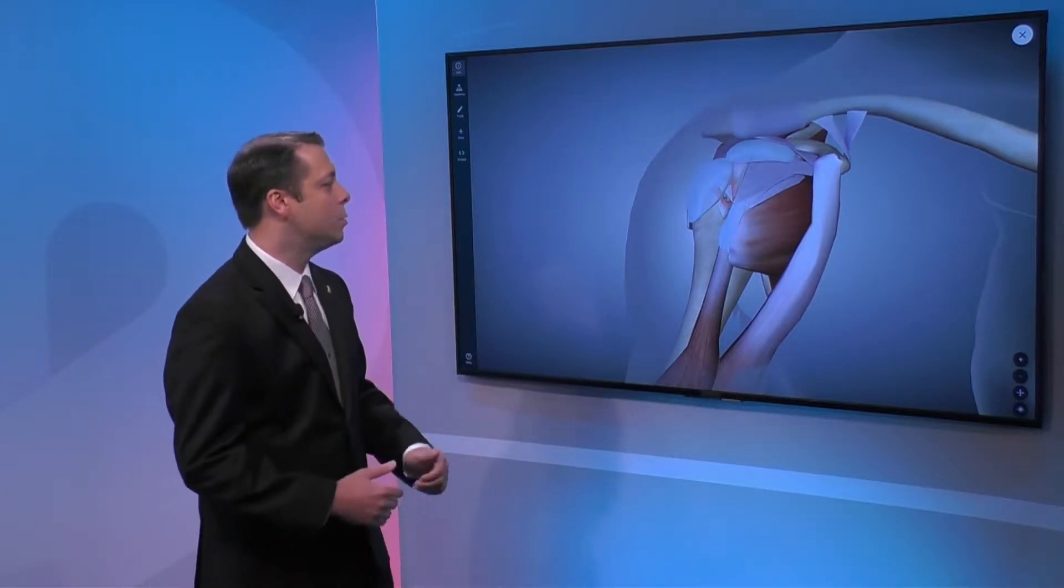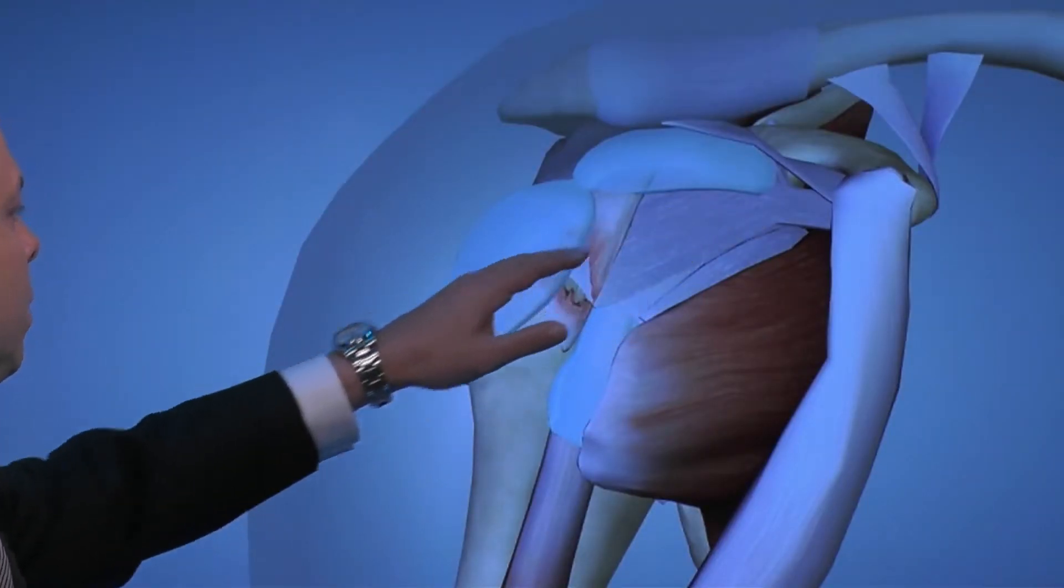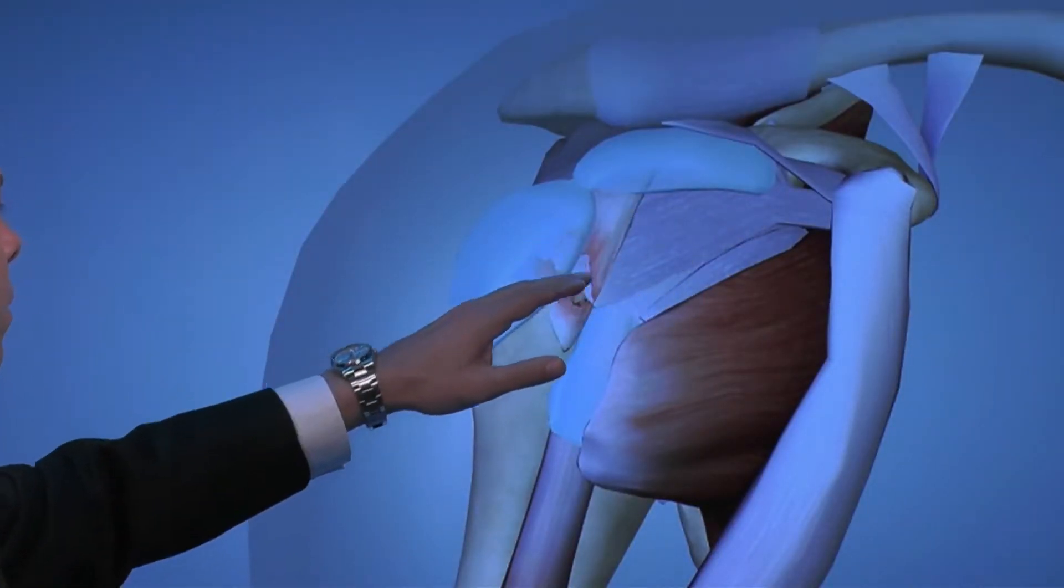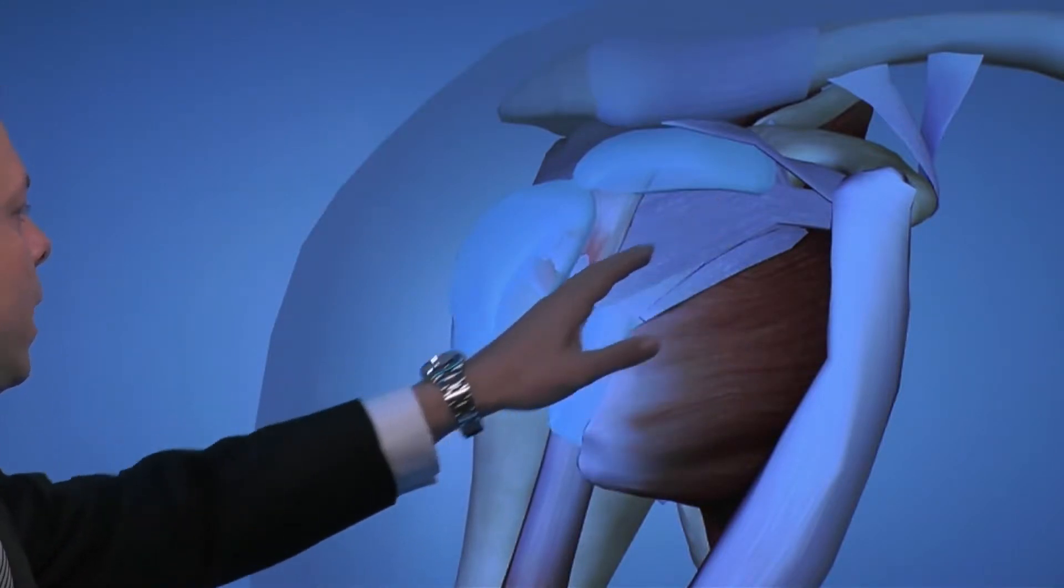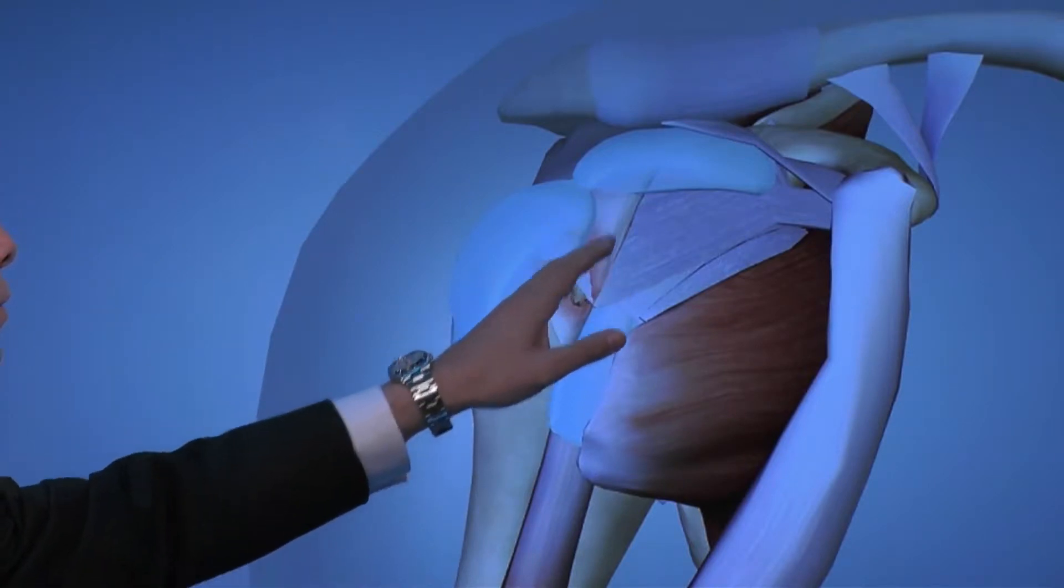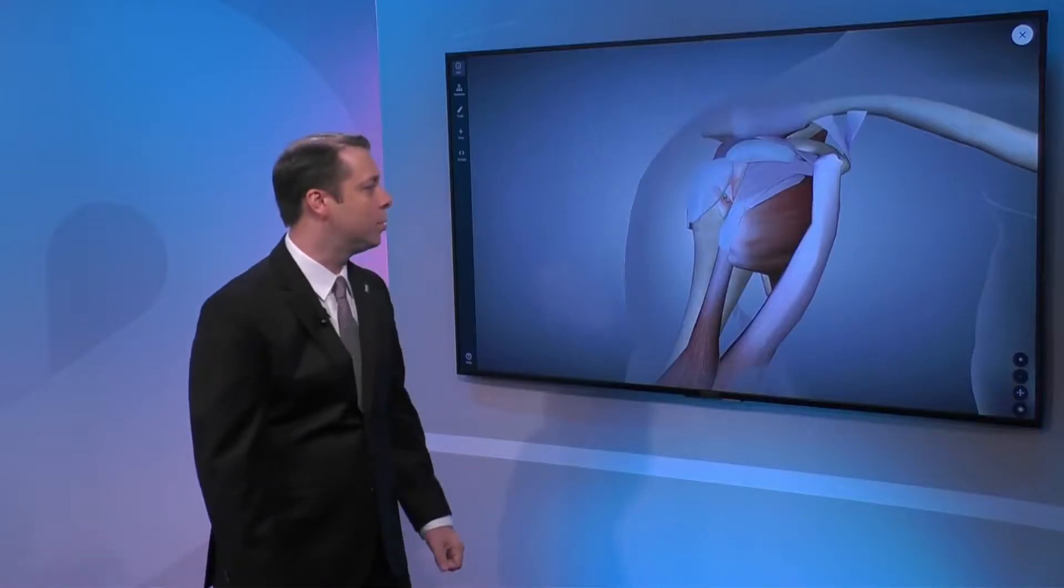As you see here in the model, this area coming down through here where we see this red area is muscle. This white area here is tendon, and the reason why it's displayed in white usually in textbooks and different visuals is because, like I mentioned before, it's an avascular area.